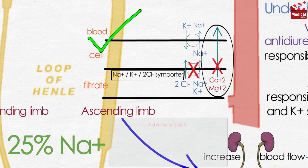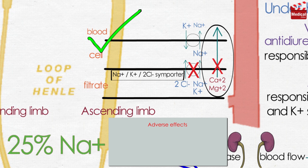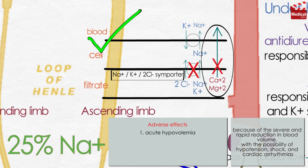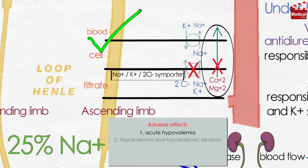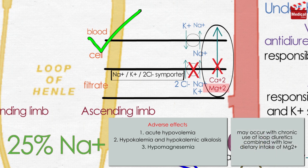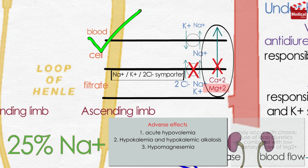Loop diuretics can cause acute hypovolemia because of the severe and rapid reduction in blood volume, with the possibility of hypotension, shock, and cardiac arrhythmias. Hypokalemia and hypocalcemia may also occur. Hypomagnesemia may occur with chronic use of loop diuretics combined with low dietary intake of magnesium.